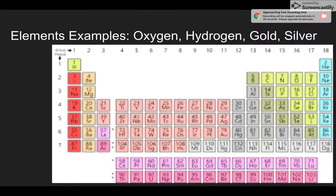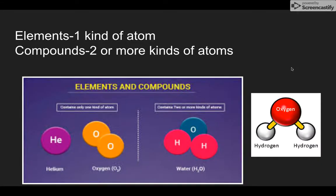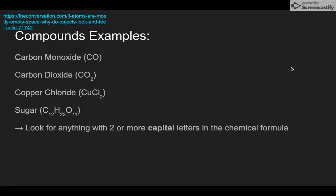So here we have elements, oxygen, hydrogen, gold, silver. These are more examples. So anything on the periodic table are elements, one kind of atom. Compounds, two or more kinds of atoms, like we said, some common examples of compounds of carbon monoxide, carbon dioxide, copper chloride, sugar. So anything with two or more capital letters in the chemical formula.